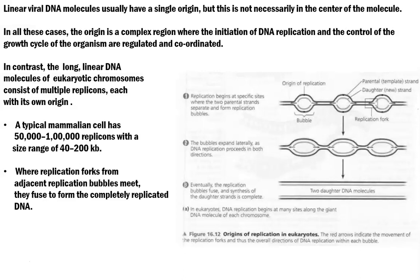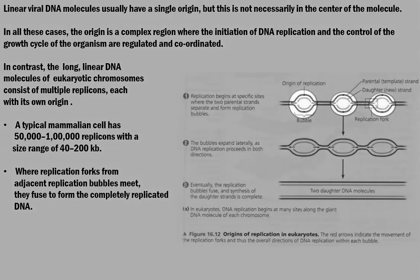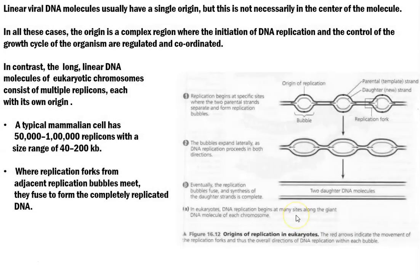Compared to viral DNA molecules, eukaryotic DNA molecules are long and linear, arranged in multiple chromosomes, and therefore they consist of multiple origins of replication. On the right-hand side you can see three origins of replication and the replication bubbles extending. As a result they will coalesce, and finally two daughter DNA molecules are synthesized.